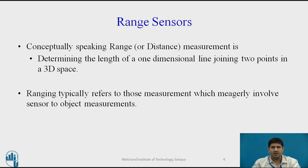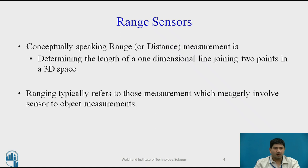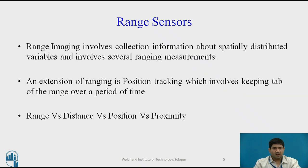Here we are not interested in the XYZ coordinates, only the straight-line distance between two points. Sometimes we don't really refer to a straight-line distance — it can be a geodesic distance as well — but the original definition remains that it involves determining the length of a one-dimensional line joining two spots in a 3D space. Typically we refer to sensor-to-object measurements: you have a sensor at one end, an object some distance away, and you are interested in finding the distance between that sensor and the object. This is the simplest definition you can come up with for range sensing.